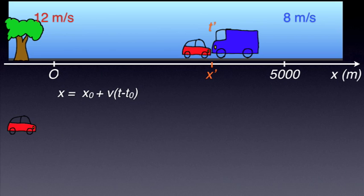For the red car, t0 can be taken 0. As the car moves at 12 m/s in the positive direction of the axis, its equation of motion can be written as x equals 12t.